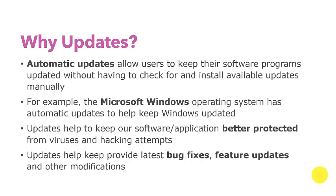For instance, if you look at your Microsoft Windows operating system, there are automatic updates going on all the time. It helps to keep Windows up to date — sometimes your system has to reboot and it tells you it's installing updates. Updates also help keep your software better protected from viruses and hacking attempts, and they provide the latest bug fixes, feature updates, and important modifications the system might need.